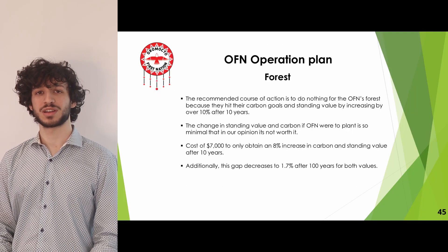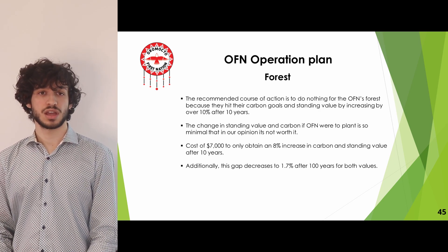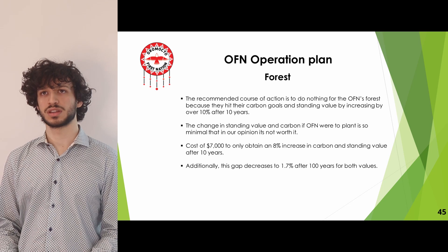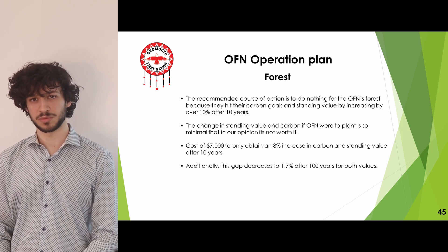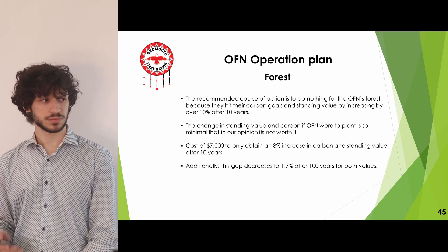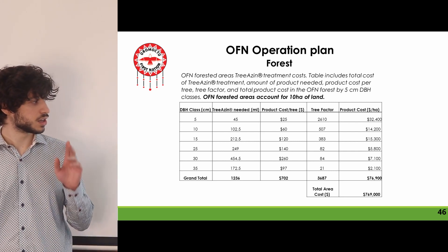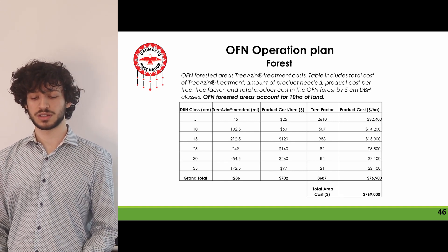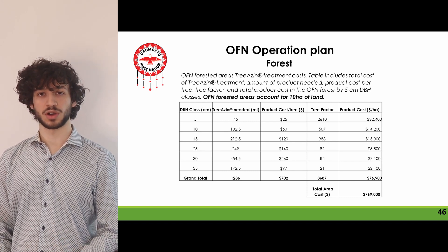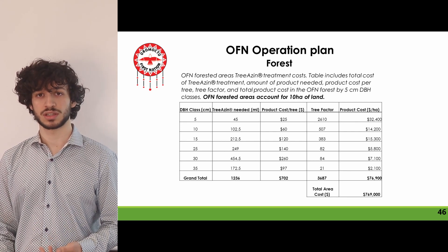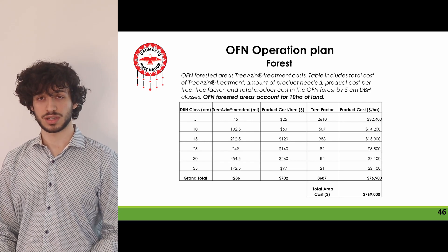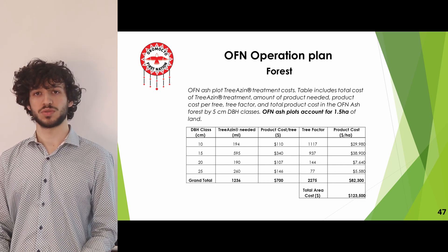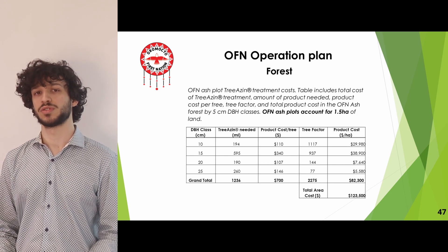For the orphan forest operations plan, we recommend Scenario 1, which is to do nothing, as Scenario 2 was not deemed to have enough return for OFN for the minimal increase it provides. Regarding EAB, treating the entire forest with TreeAzin would cost about $770,000 annually, which is unreasonable. We recommend focusing on priority trees — those outside buildings, on properties, and large-diameter seed trees — to drastically reduce annual cost. For the higher-density ash plot areas, the cost is $123,000 annually, with the same priority tree recommendation still applying.